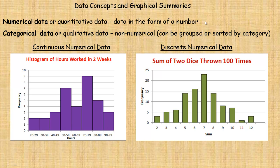Discrete numerical data are data that are generally just whole numbers. You can't have values in between integers. For example, when you throw two dice, you could have a sum of 2 or 3 or 4 up to 12. But you can't get a sum of 2.5 or 8.2 — you can only get whole number sums.